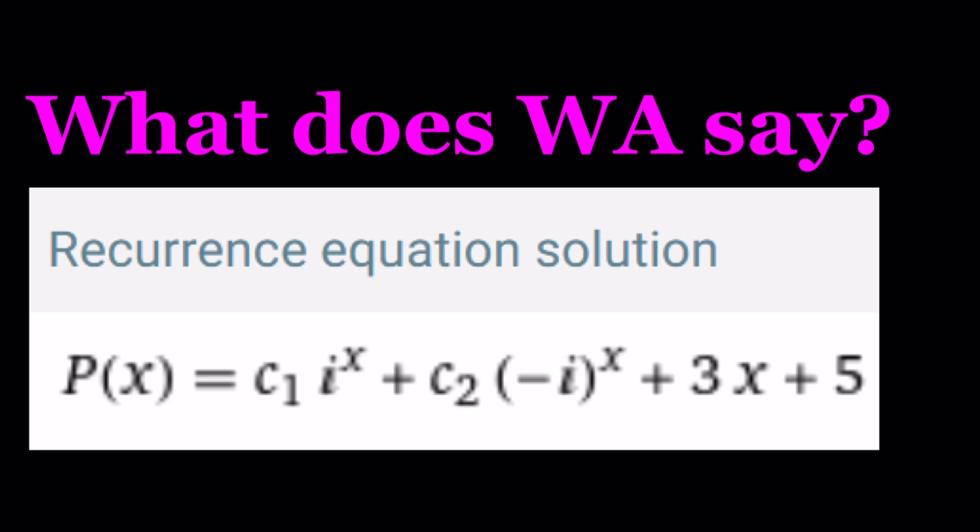I get the 3x + 5 piece because that's what I got, right? That's my real polynomial. Where does the i and negative i come from? Something to think about. Again, I'm going to leave that open. Please let me know what you think. And this brings us to the end of this video.